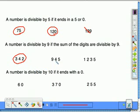945. 9 plus 4 is 13. 13 plus 5 is 18. 18 is divisible by 9, so 945 is divisible by 9.